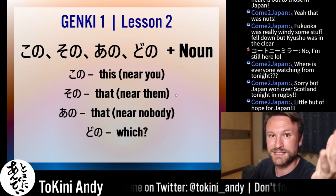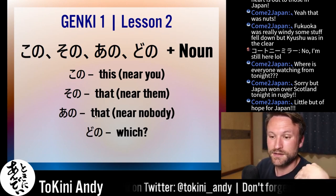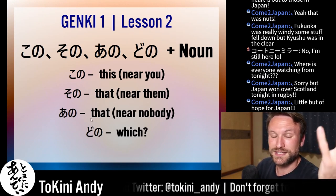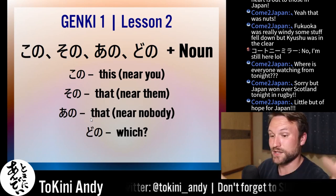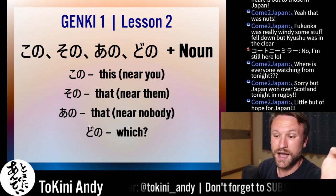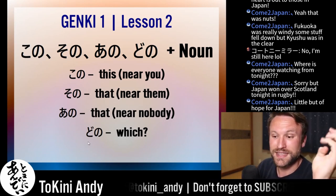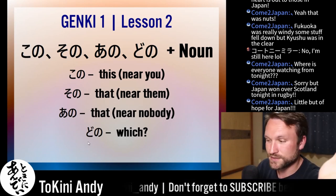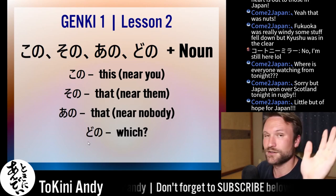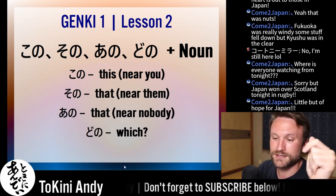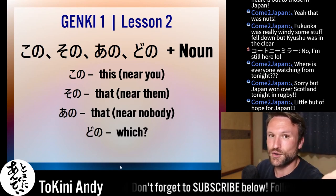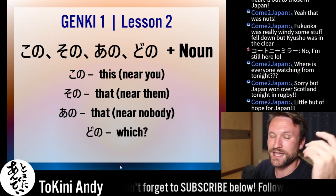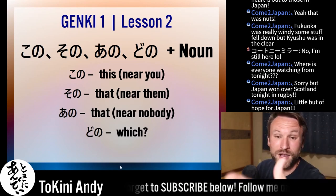The rules are the same. Kono is 'this' near me, sono is 'that' near someone else, ano is 'that' near none of us — or near nobody, far off in the distance — and dono is once again a question word.